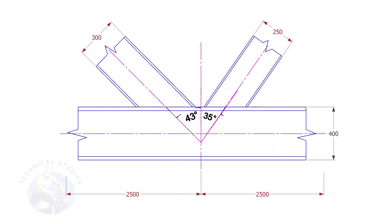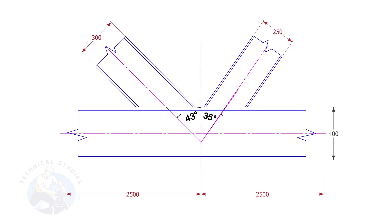To calculate the cutback of a beam or channel, we need to know two things: the size of the beam, and the including angle.